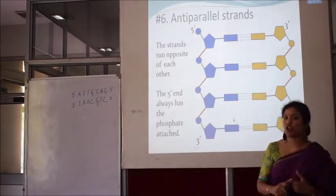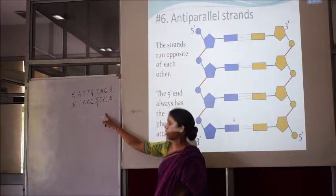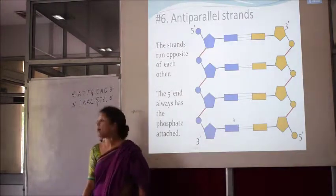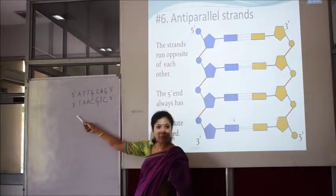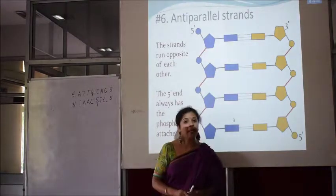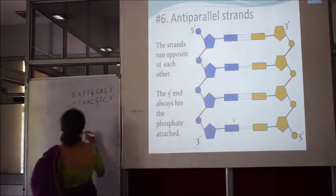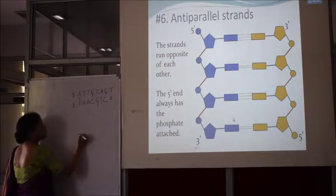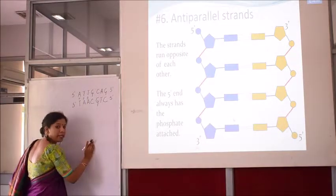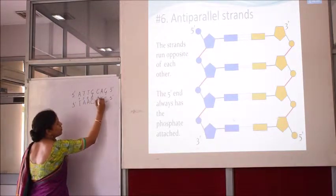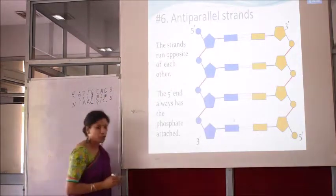This is the rule of complementarity. If you know the composition or sequence of one strand, you can decode the sequence of the other strand. Remember: if it is 5' here, it has to be 3' on the complementary strand, and vice versa. Between A and T there are two hydrogen bonds; between A and T again two hydrogen bonds; between G and C there are three hydrogen bonds; and between G and C again three hydrogen bonds.